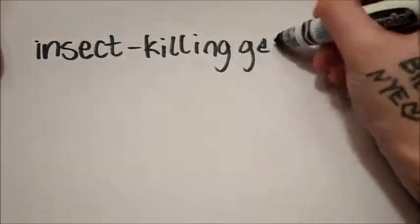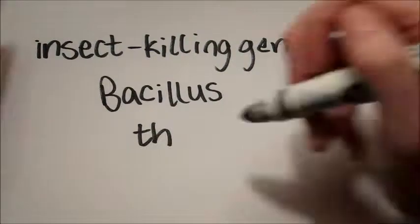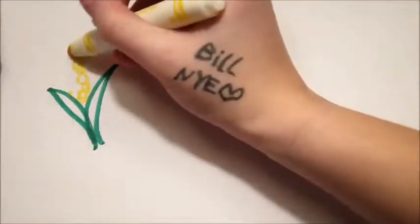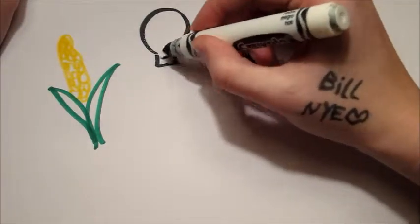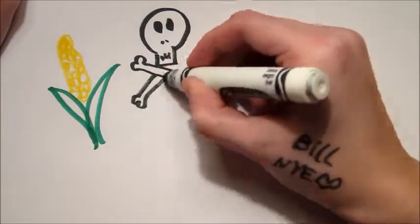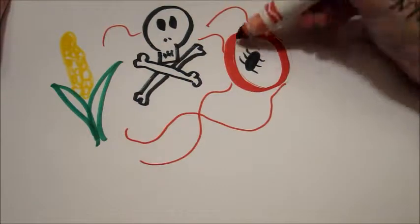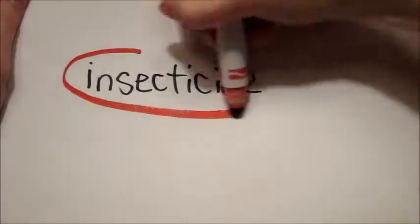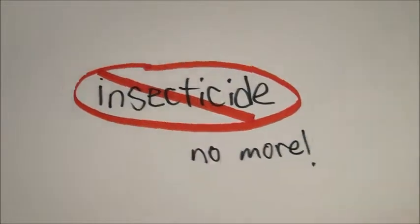An insect-killing gene is transferred from a bacteria called Bacillus thuringiensis, or however you pronounce that big word. Anyway, this insect-killing gene allows the sweet corn to emit a poisonous chemical that kills off the bugs that are usually attracted to it. And this is really good, but why? Well, farmers otherwise would have to use insecticides, but with this insect-killing gene, insecticides no more.